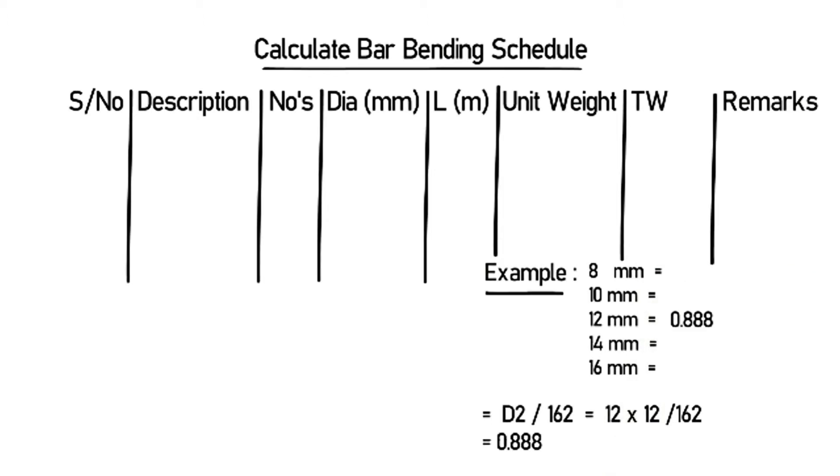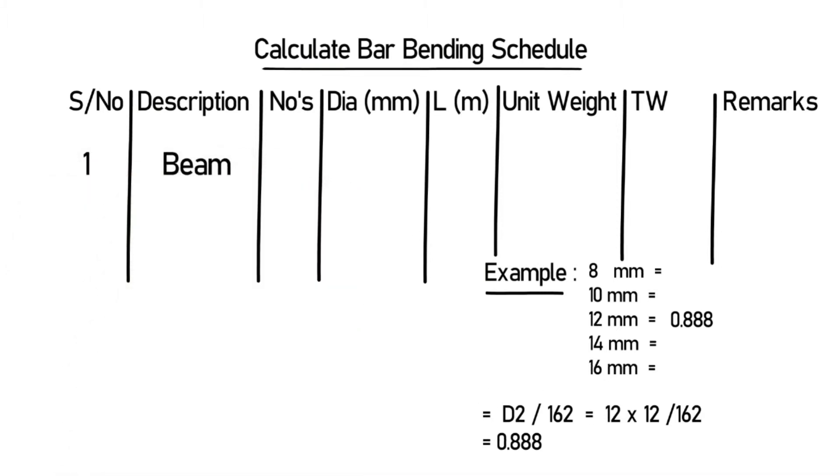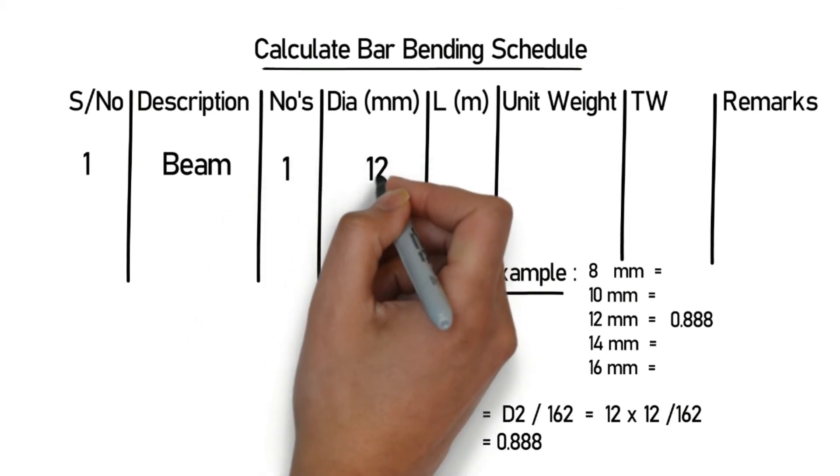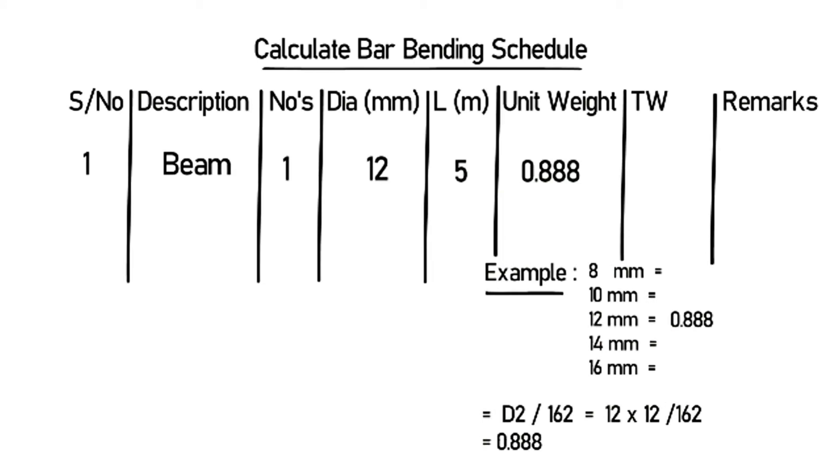Let's find out the bar bending schedule for a beam. The serial number will be 1. For description, we will write beam. For numbers, I have to find out the BBS for one beam, so I will write 1. Diameter - in this example we will take the 12mm steel diameter.